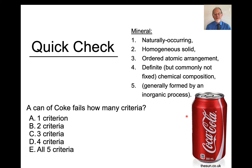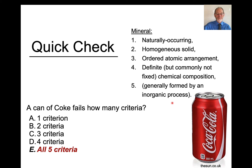Here's another example: a can of Coke. How many criteria does it fail? My view is that it fails all five criteria. It's not naturally occurring, it's not homogeneous, and the liquid inside is not solid. The can has an ordered atomic arrangement, but the liquid does not. It does not have a definite chemical composition — the composition changes from the can into the liquid — and it's not formed by an inorganic process.